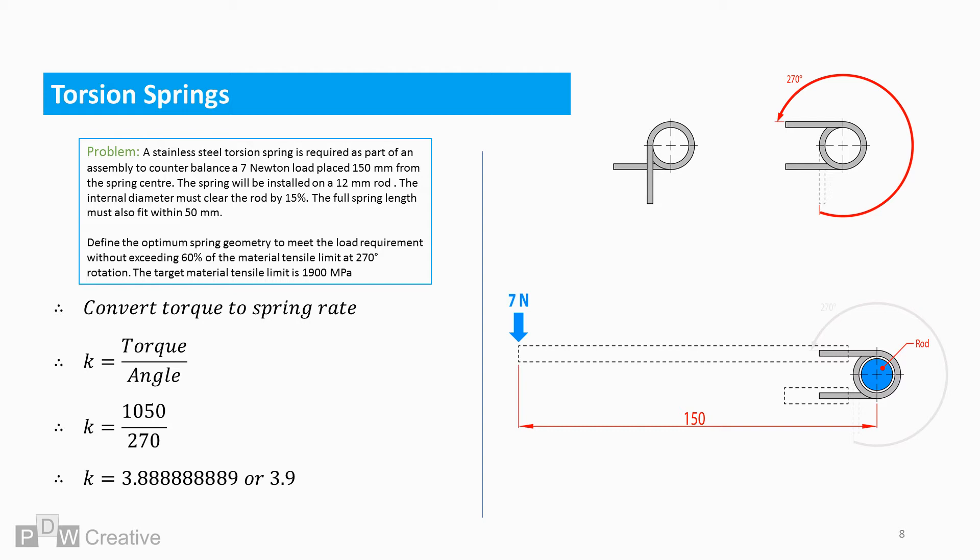The target stiffness for our design is 3.9 Nmm. This being the spring response in Nmm per degree of spring arm rotation.